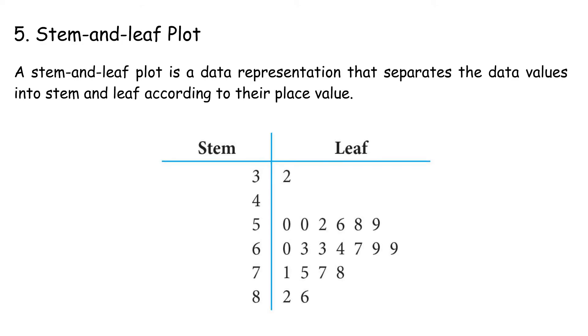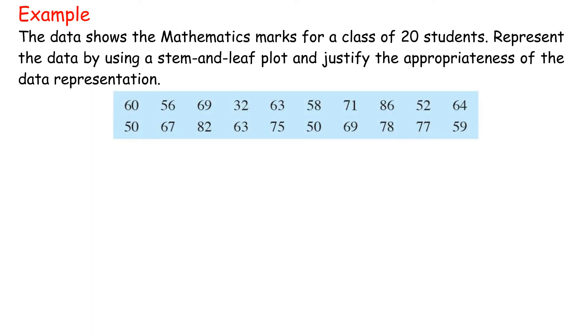Type 5 — Stem and Leaf Plot: A stem and leaf plot separates data values into stem and leaf according to their place value. Example: the data shows the mathematics marks for a class of 20 students. Represent the data using a stem and leaf plot and justify the appropriateness of the data representation.